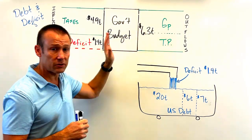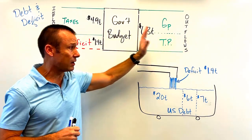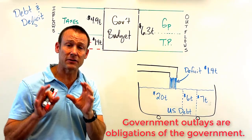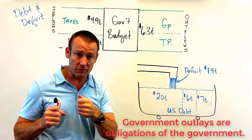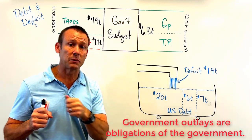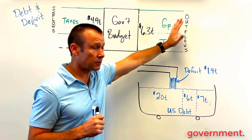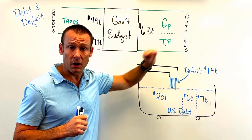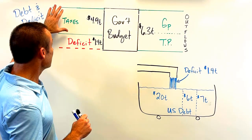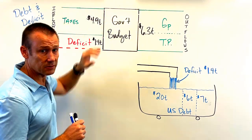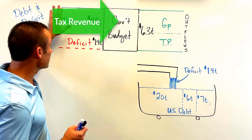Those are our two major types of obligations. It's so important that students understand this is legislation that has been passed — this is now law that we have to spend this money. The money coming in is taxes. A deficit is when there's a shortfall — when your tax revenue is less than your obligations.